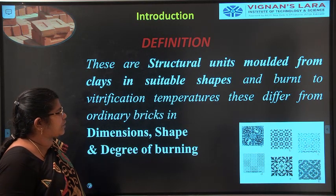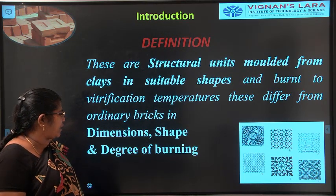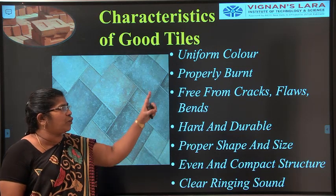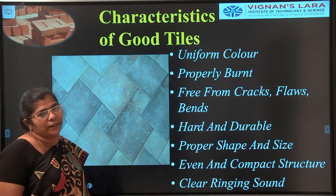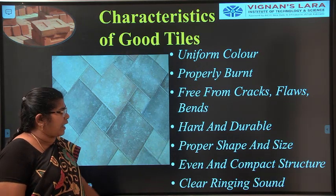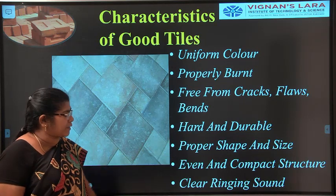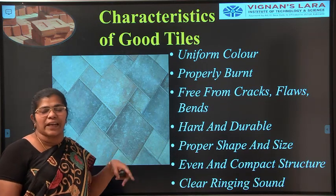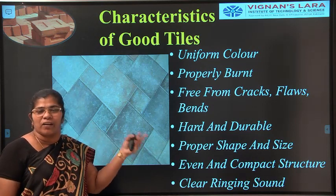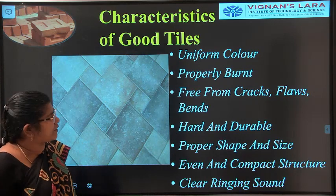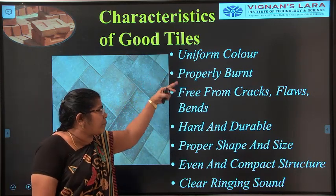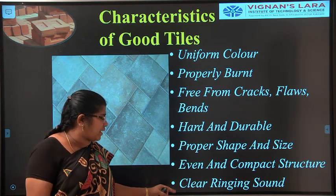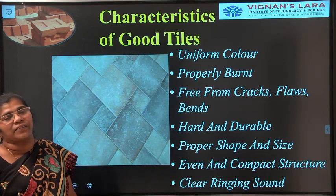Now we look at tiles. The characteristics of tiles are: uniform color, properly burnt, free from cracks, flaws, and bends, hard and durable, proper shape and size, even and compact structure, and a clear ringing sound when struck — the same characteristics as bricks. Tiles are essentially a smaller version of bricks made from similar materials.